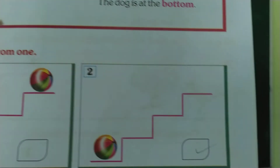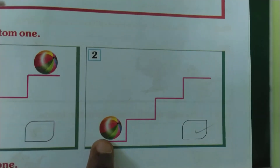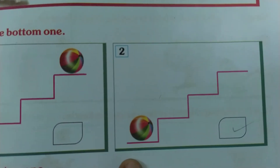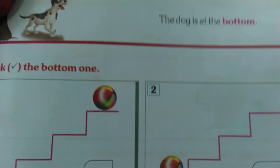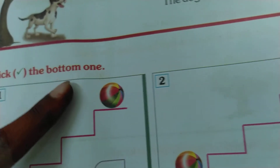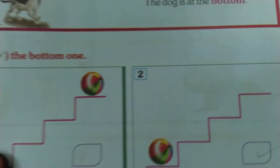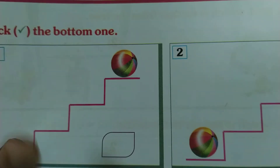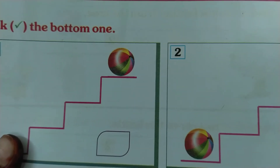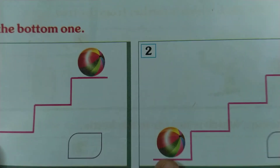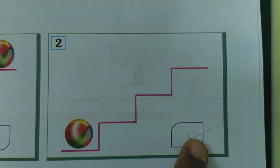In box number 2, we can observe a ball at the bottom of the steps. They asked us to tick the bottom one, which means the ball that is at the bottom. So between the two pictures, the ball that is at the bottom is in our second box — we should tick there.